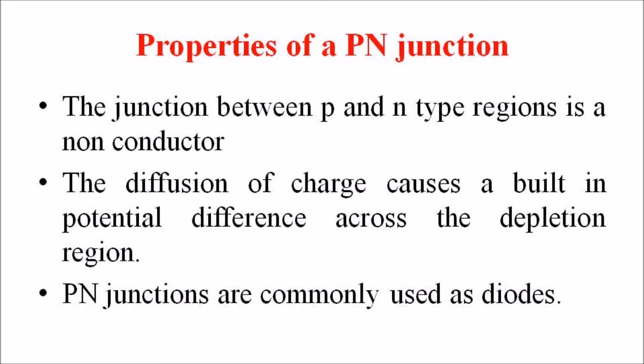A PN junction will conduct current when the applied external voltage exceeds the built-in potential of the junction. As we mentioned earlier, the barrier potential for silicon is 0.7 volts and for germanium is 0.3 volts.